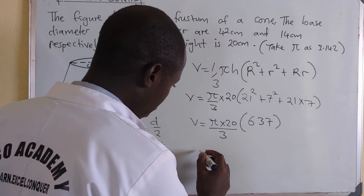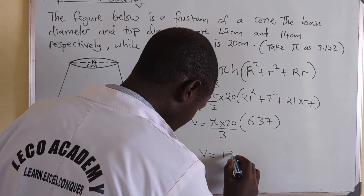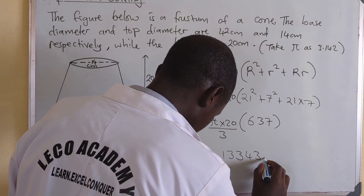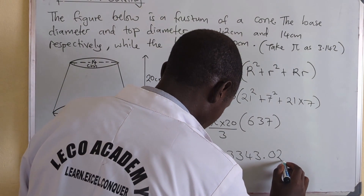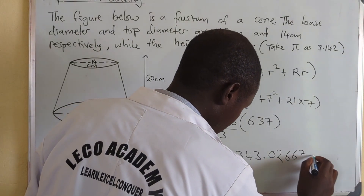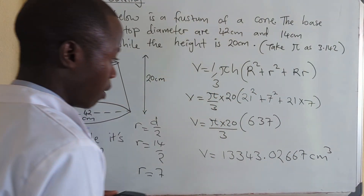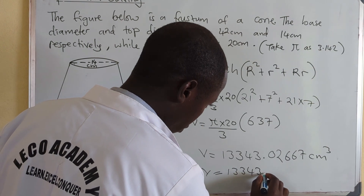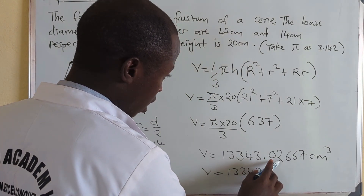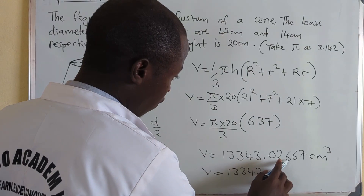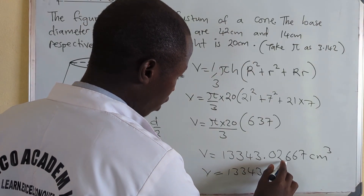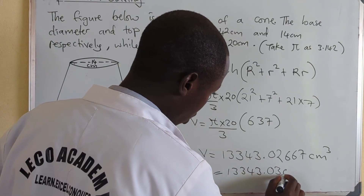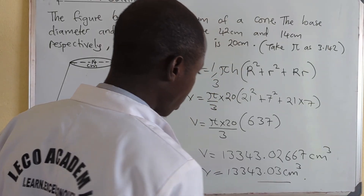Therefore, volume = 13343.0267 cubic centimetres. Rounding to 2 decimal places: the third figure after the decimal point is greater than 5, so we add one, giving a final answer of 13343.03 cubic centimetres.